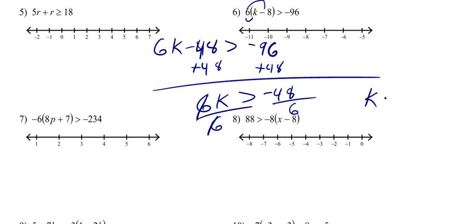So what we know is k is going to be larger than a negative 8. So we've got our negative 8. Is this a closed or open dot? It's open because it's greater than. If it had that little greater than or equal to, it would be closed. But we don't. So it's open.